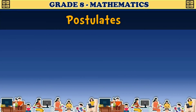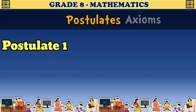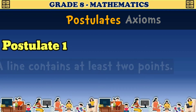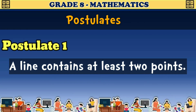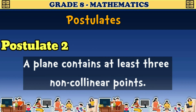Here are the seven postulates, also known as axioms. Postulate 1: A line contains at least two points. Postulate 2: A plane contains at least three non-collinear points.